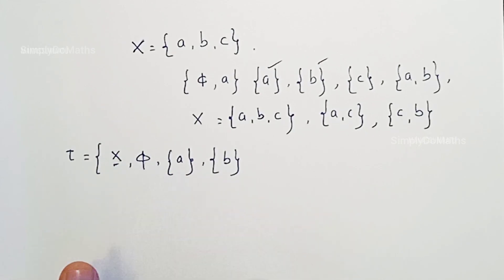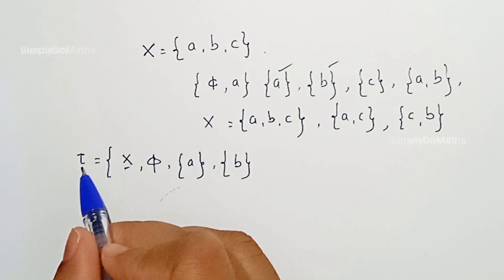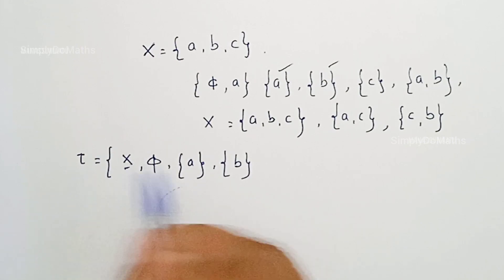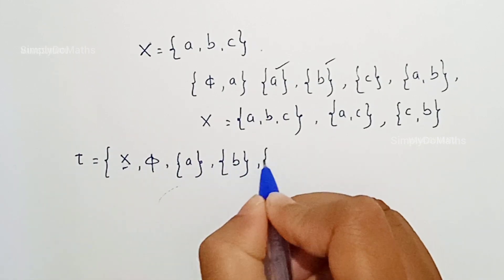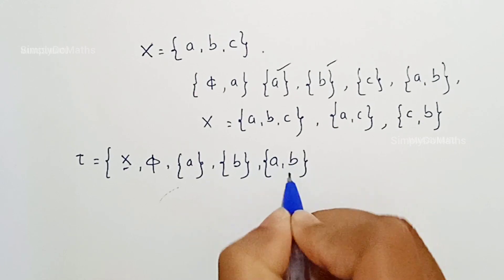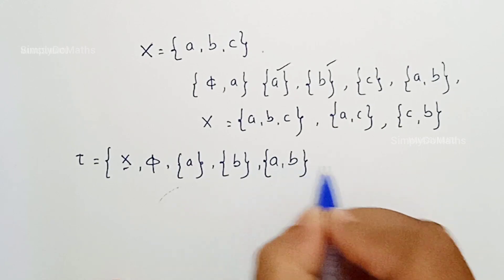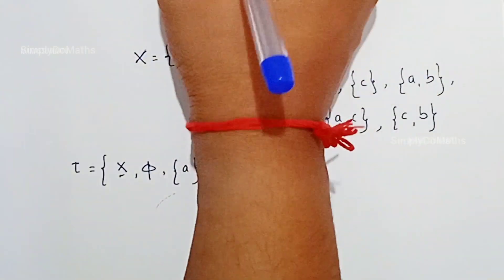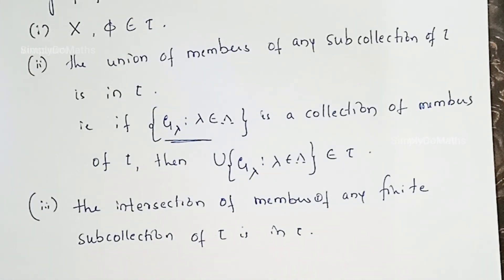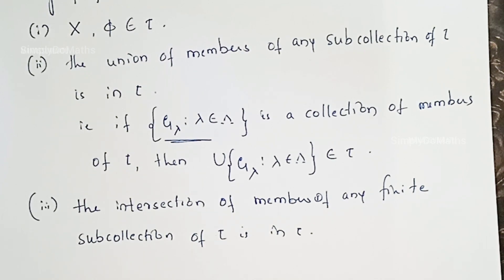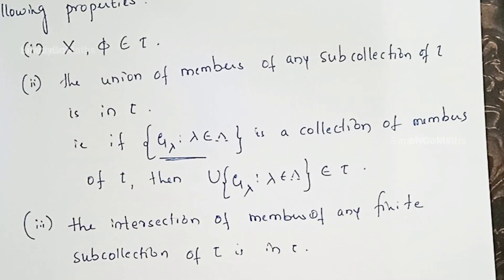However, the union of singleton sets {a} and {b} is the set {a,b}. If {a,b} is not in tau, then this tau would not satisfy the second property. So if we include the set {a,b} in tau, then the union of any members from the sub-collection of tau will be in tau, and the second property holds.